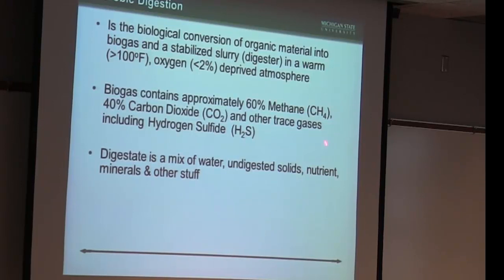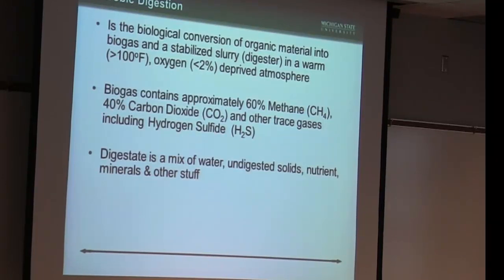Digestate is the other product that's generated — a mix of water, undigested solids, as well as a lot of nutrients, minerals, and other stuff, so it is a very good fertilizer material. The problem is it's very dilute, because it is typically 80% water or more. Most digesters operate at about 10% solids or less — so you're looking at 90% water. The difficulty with digestion is really the water fraction.